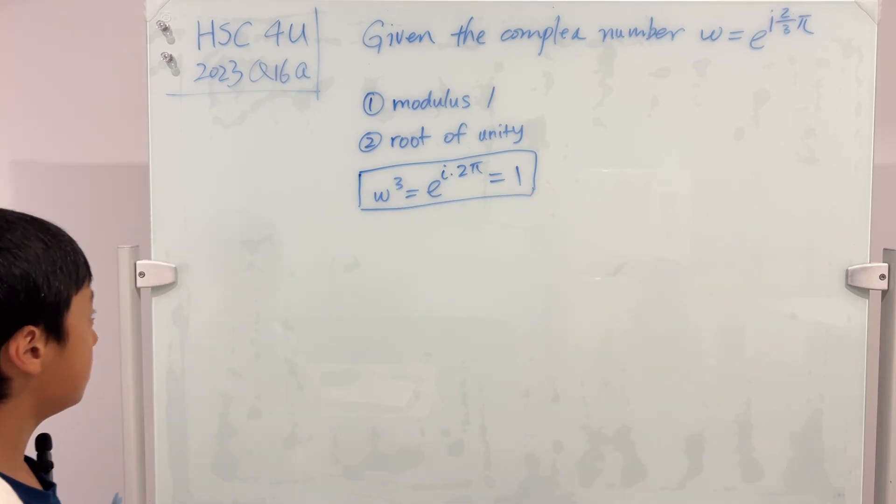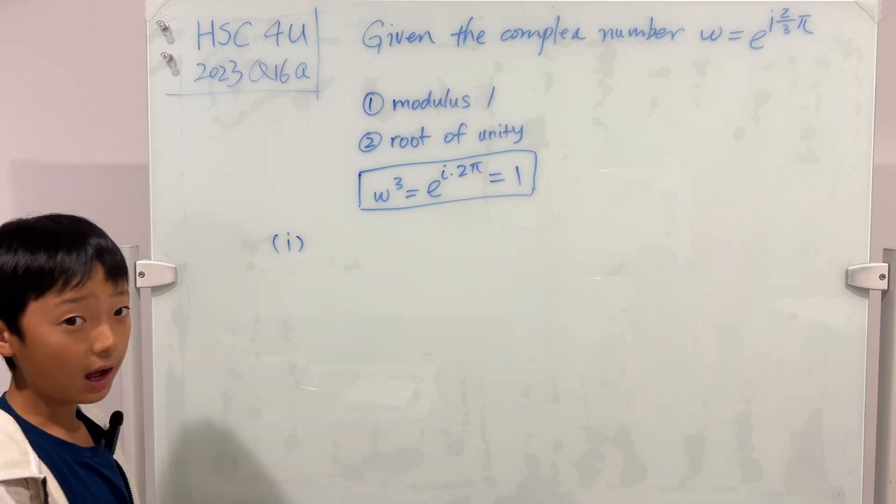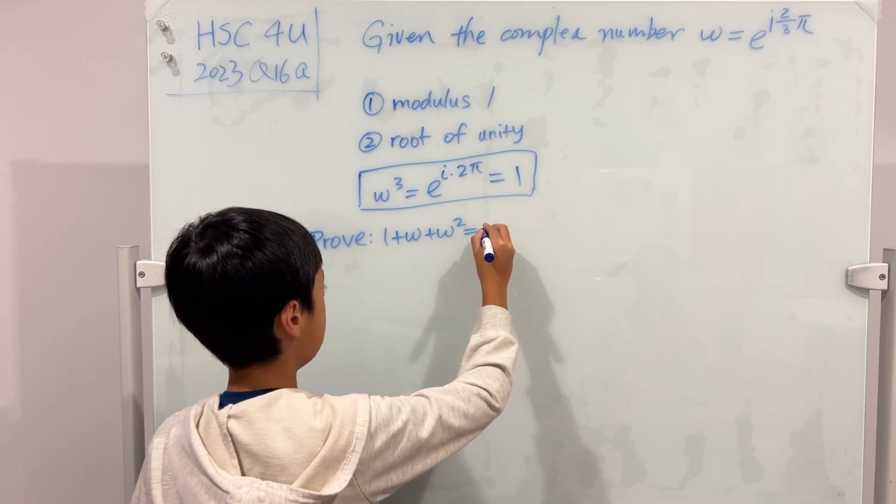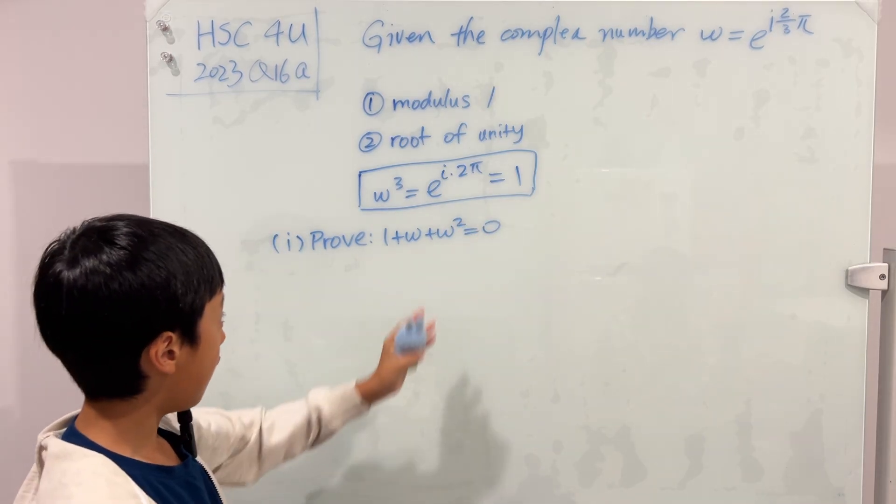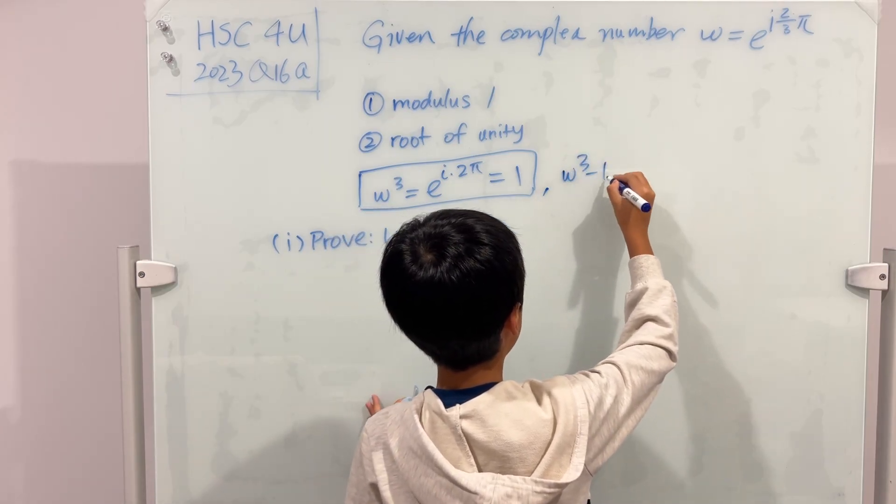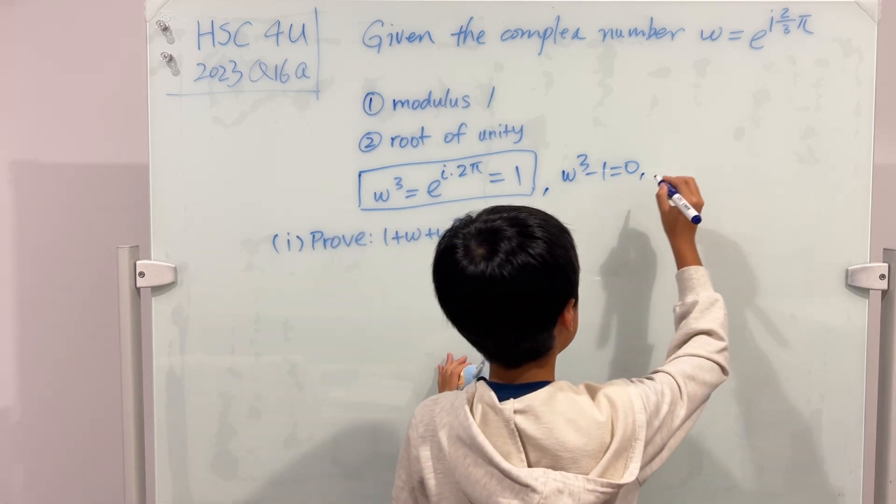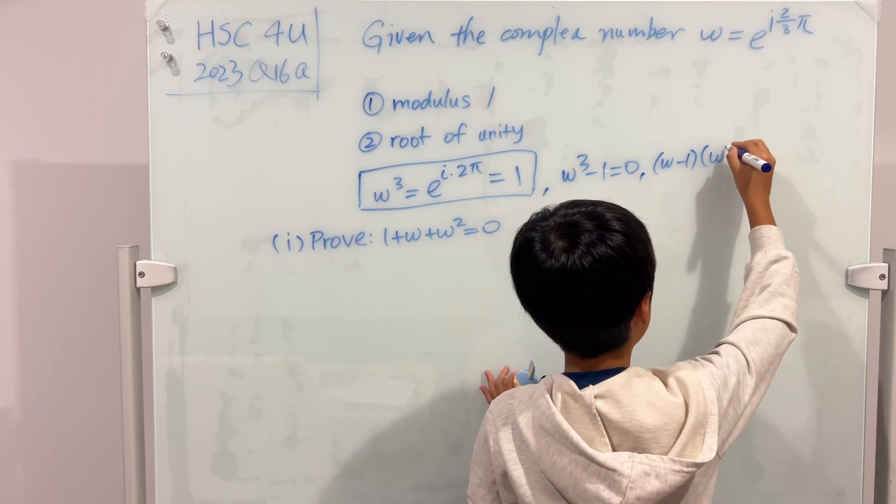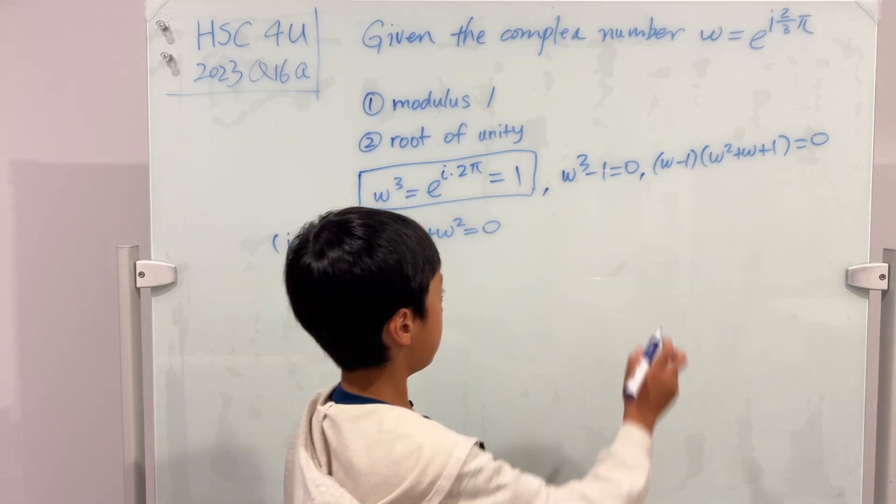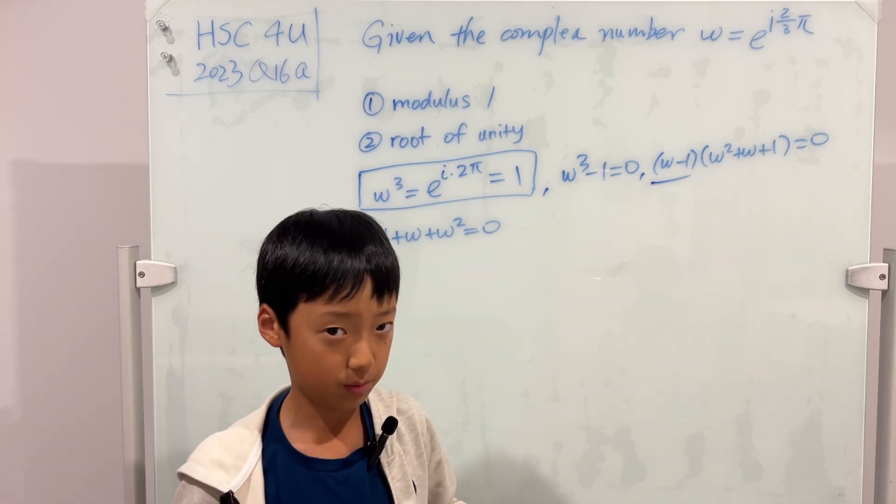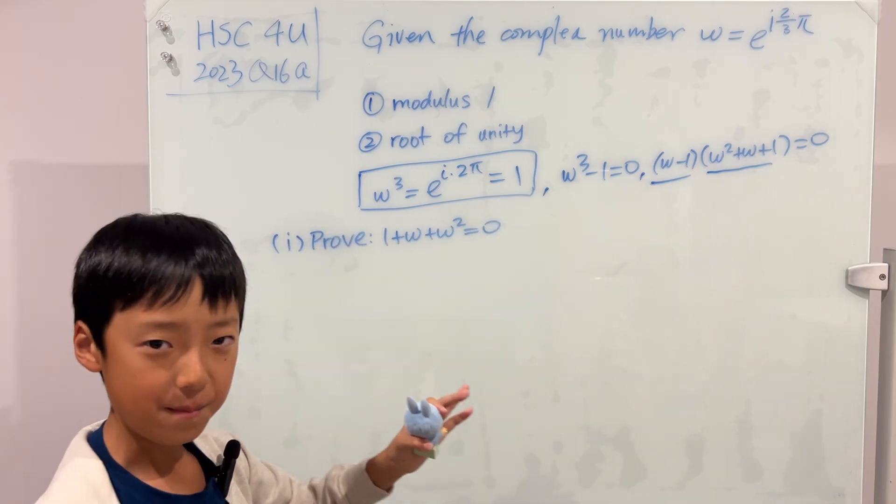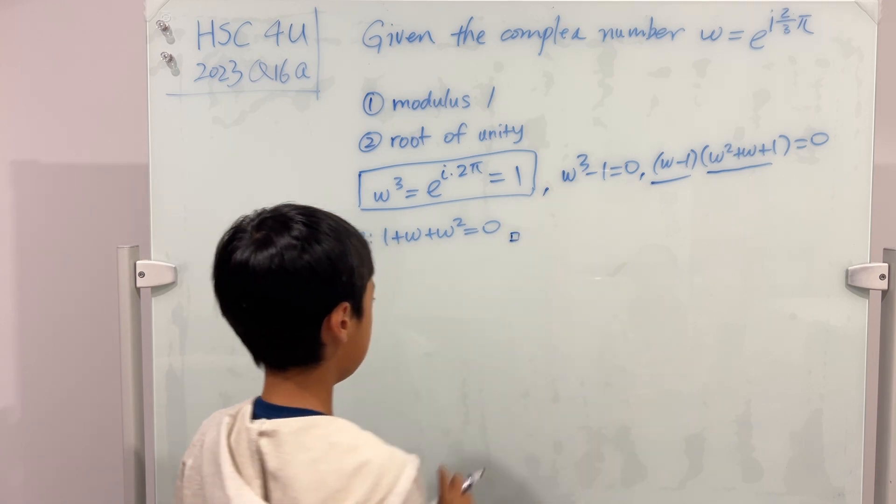And now we have everything we can use to now do i. So i says to prove that 1 plus w plus w squared is equal to 0. Now this is actually super simple, because now we're going to use this information. So I'm going to move the 1 to the left-hand side. So we'll get w cube minus 1 is equal to 0. And now I'll factor the left-hand side. So we'll get w minus 1 times w squared plus w plus 1 is equal to 0. So either this is equal to 0 or this is equal to 0. But as you can notice, the first one being equal to 0 is definitely impossible. So we have the second one being equal to 0. And if you notice again, this and that are the same. So we actually just proved it. And of course, don't forget the little box. You always need to include this.